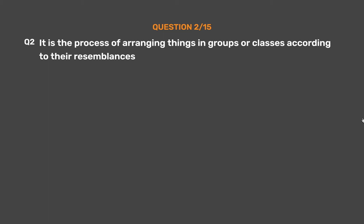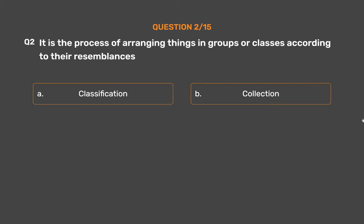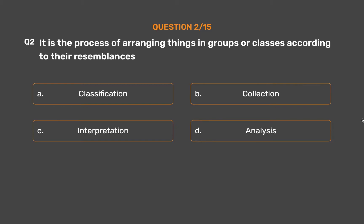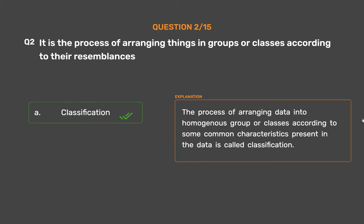Question number 2. It is the process of arranging things in groups or classes according to their resemblances. The correct answer is Option A. The process of arranging data into homogeneous groups or classes according to some common characteristics present in the data is called classification.